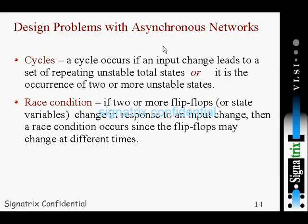Coming to design problems with asynchronous networks. When we are designing asynchronous circuits, one problem we can see is cycles. A cycle occurs if an input changes and leads to a set of repeating unstable total states, or it is the occurrence of two or more unstable states. In asynchronous design, there is no global clock signal — whenever there is a change in input, that is taken as a cycle.